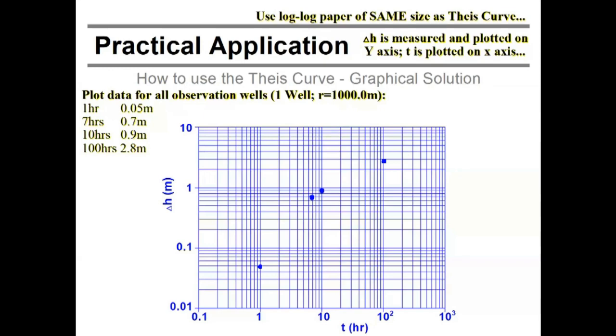What's next? We're going to plot these data points. So now we have two graphs. We have one with our W(u) versus inverse of u plot. And we have another one, same size graph paper. And they need to be separate. You cannot put them both together on one graph paper. You need to have two graph papers to do this. And we have one graph paper with our data points from my well test on one observation well.